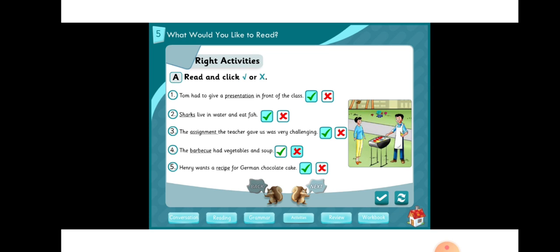A. Write activities. Read and write a check or a cross. Is the underlined word used correctly or incorrectly? Check if it's correct or cross if it's wrong. Look at the phrase - is it used correctly?